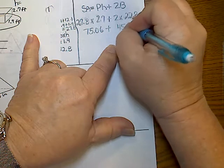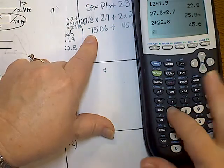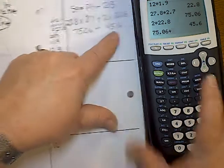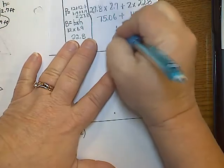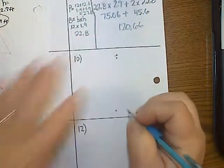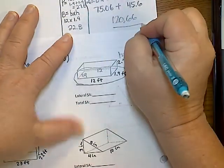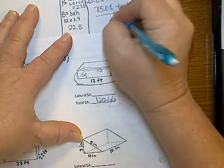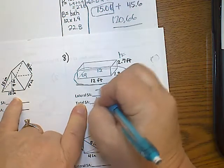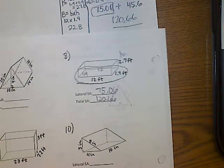then I'm going to do 2 times 22.8, and I get 45.6, okay? And you notice I'm still leaving lots of space, so now I'm going to add them together, 75.06 plus 45.6, and I get 120.66, okay? I'm going to come over here, so remember that this is my total, 120.66, and then here before the plus sign is my lateral, 75.06, okay? So I gave you a clue, and that's probably the hardest one on here.